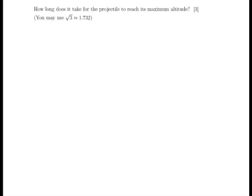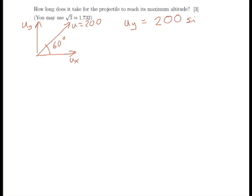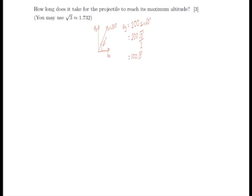The key thing to remember with all projectile motion questions is that we have to be able to treat the horizontal and the vertical motion entirely separately. Our u is 200, our horizontal we know is 100, and we need to find our vertical component in order to work out the maximum altitude. The vertical component is going to be 200 sin 60 degrees, which equals 200 multiplied by root 3 over 2 — another trigonometric identity we need to be aware of — which simplifies to 100 root 3.